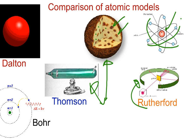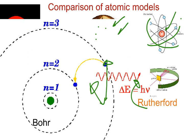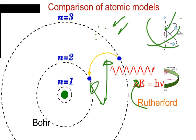Bohr came along and proposed this model, where we have energy levels. N equals 1, N equals 2, and N equals 3 represent specific energy levels in which certain numbers of electrons could reside. Also, with these energy levels, if you want to move to a higher or lower energy level, energy has to be absorbed or released depending on what you want to do. If you want to go to a higher energy level, you have to absorb energy; if you fall back down to a lower energy level, you must release energy.